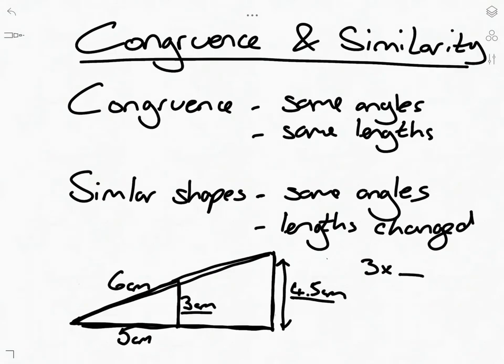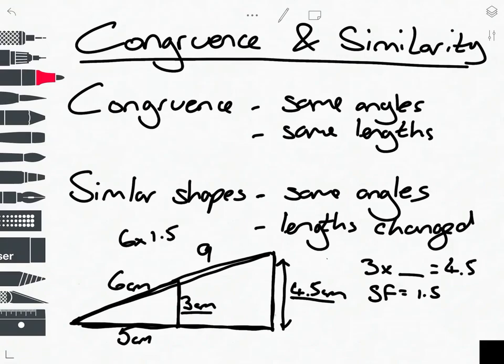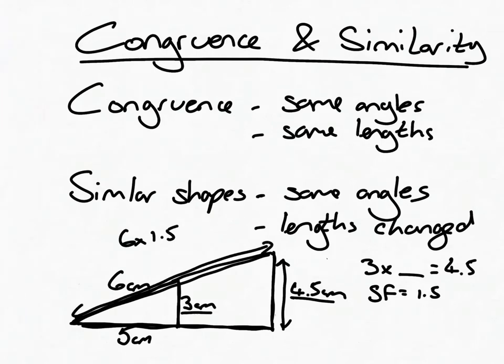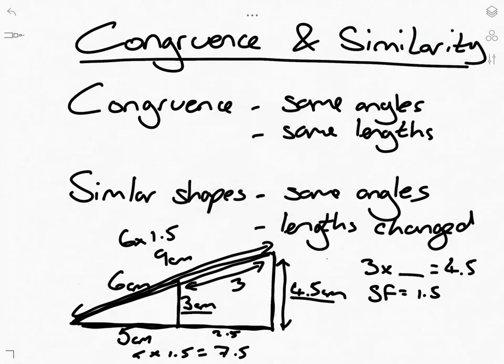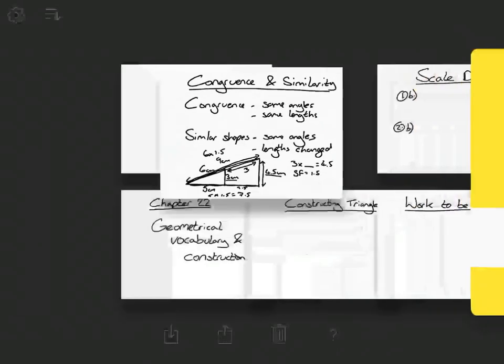So the scale factor, we have 3 times something is 4.5. So you should be able to work out that that's the scale factor equals 1.5. So then we just use that on the other ones. So 6 times 1.5 is going to be 9. So the whole thing is 9. So for the whole way up here, it's 9, which means this bit here is 3. And then if we do it for the 5, then 5 times 1.5 equals 7.5. So this bit's 2.5, and the whole thing is 7.5. That's as hard as they'll get, really. But congruence and similarity are quite straightforward things. You just have to make sure you take your time and realise which bits match up.